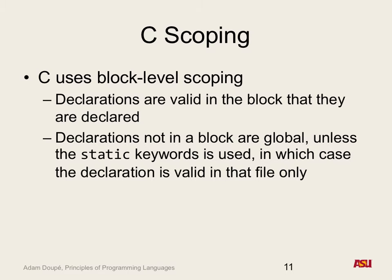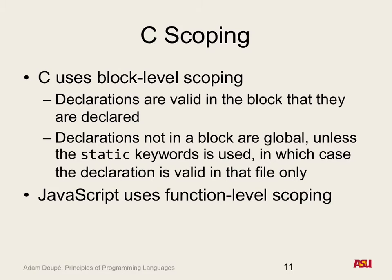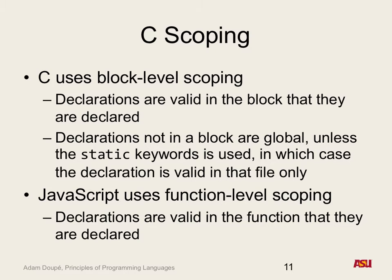JavaScript is different — declarations are valid in the function. In JavaScript, if you have a script block and want to declare a variable without it leaking to global scope, you have to surround it in an anonymous function and immediately call that function. That's why doing a variable declaration in JavaScript without wanting it to be global requires creating an anonymous function.